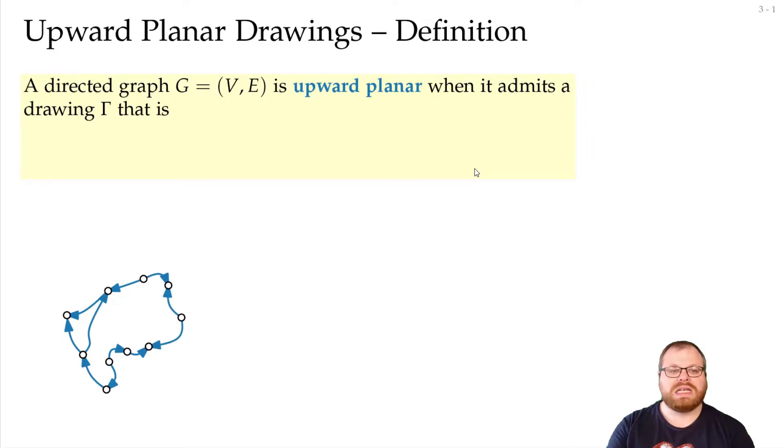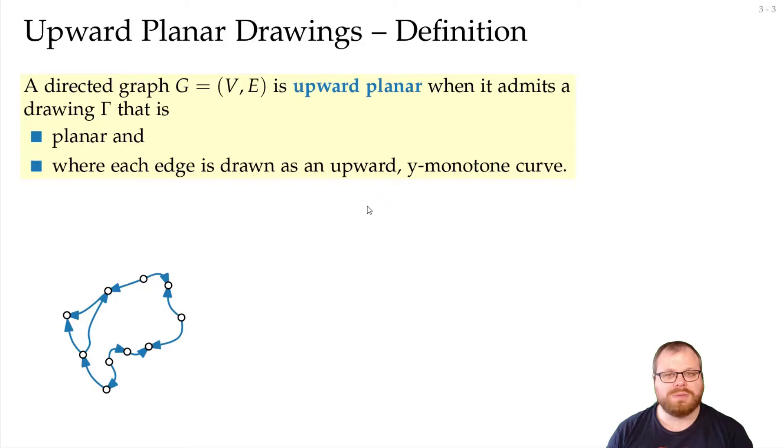A directed graph is upward planar when it admits a drawing that is planar, and where all the edges are drawn as upward y-monotone curves. So, while this is planar, the edges here are not all drawn upwards. On the other hand, this one here is an upward planar drawing.